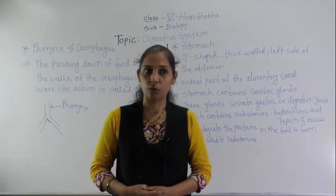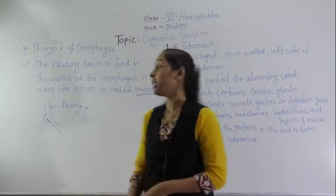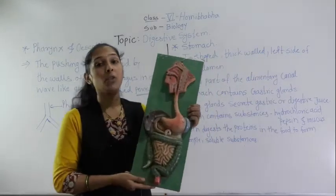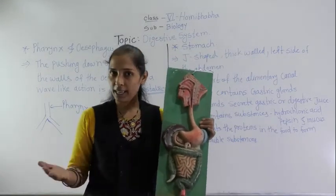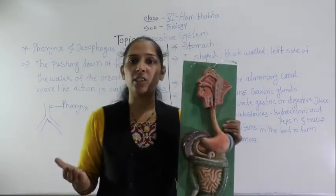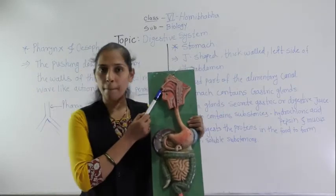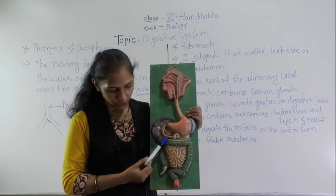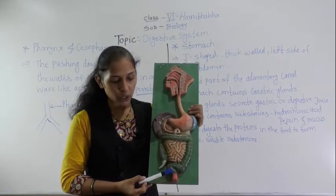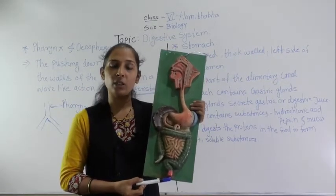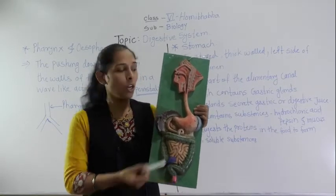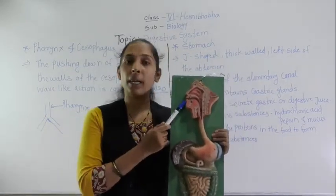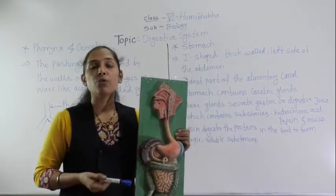Hello dear students, good afternoon. In our previous video we discussed about the digestive system. Here I have a model of the digestive system. We discussed the different organs related to digestion, which is called the alimentary canal or digestive tract — mouth, esophagus, stomach, small intestine, large intestine, rectum, and anus. Today we will move to the next organ of the digestive tract.